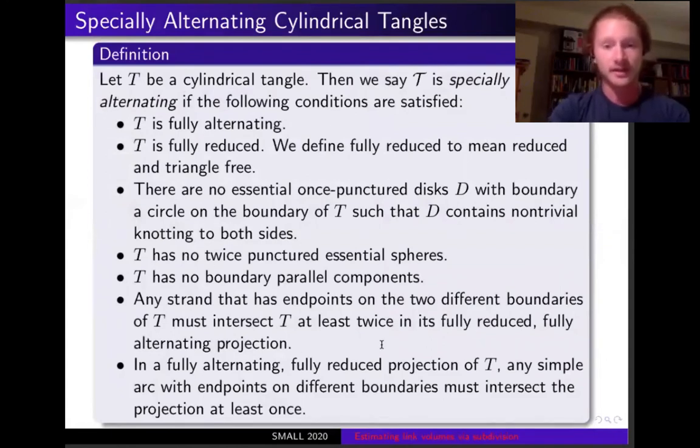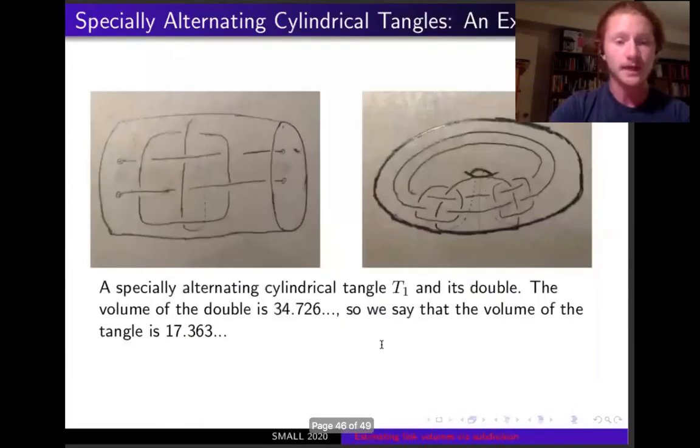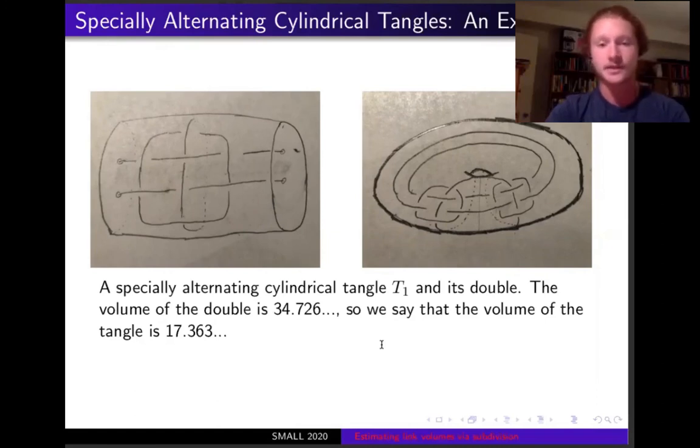This definition is quite a lot and you are not expected to take in all of it. The basic idea is that each of these conditions are fairly easy to identify visually. So, given a tangle, I can look at it and really quickly determine whether it is specially alternating or not. And so, let's go and take a look at an example. On the left, we have a specially alternating cylindrical tangle. We'll call it T1. And then on the right is its double, so in a torus. And note that the core curve is not drawn in either of these. That's just to make the pictures a little bit easier to see. The volume of the double in this case is 34.726. So, the volume of the tangle is half of that, which is 17.363.